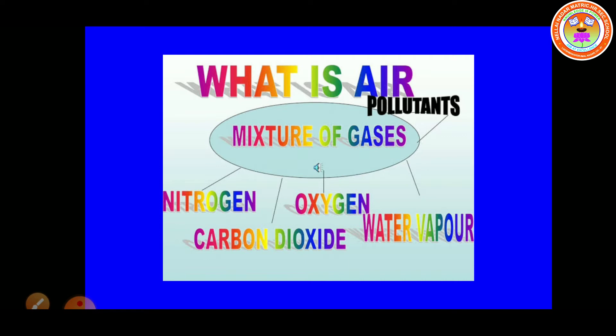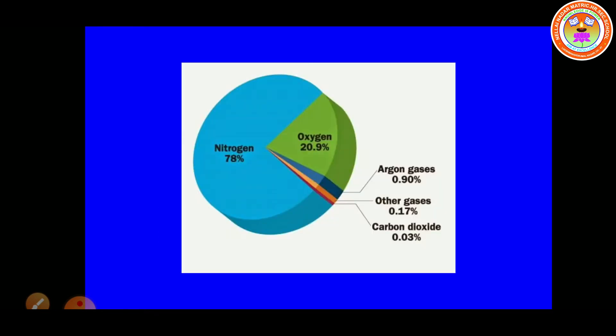And students, what is Air? Air is a mixture of gases like Nitrogen, Carbon Dioxide, Oxygen, and Water Vapor. What is the composition of Air? We know Air is a mixture of gases, so the composition of Air in terms of percentage of its various components can be written as follows.